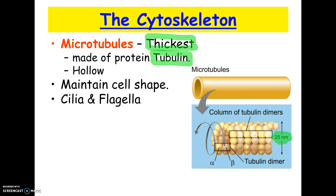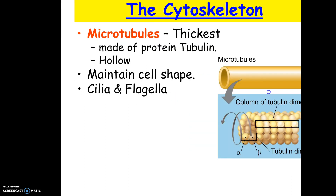Microtubules also compose cilia and flagella. The only cell in us that has flagella would be a sperm cell. Cilia do line certain respiratory tracts. Protists and other organisms may move using cilia or have cilia around their mouth area — you may have seen in the pond water that they actually had cilia to bring in food. So cilia and flagella are made of microtubules.